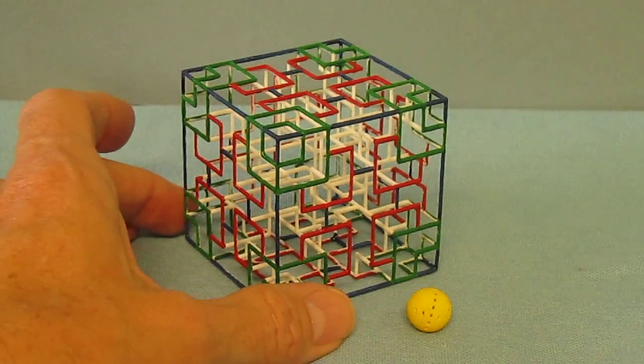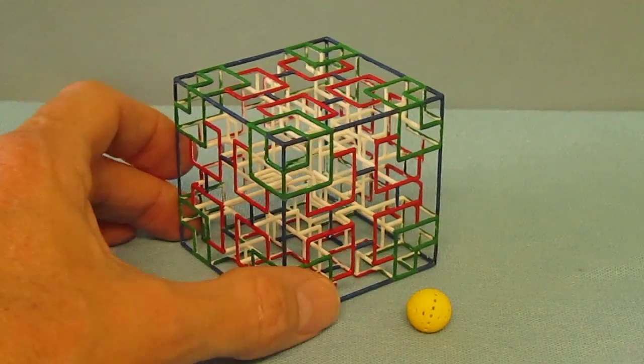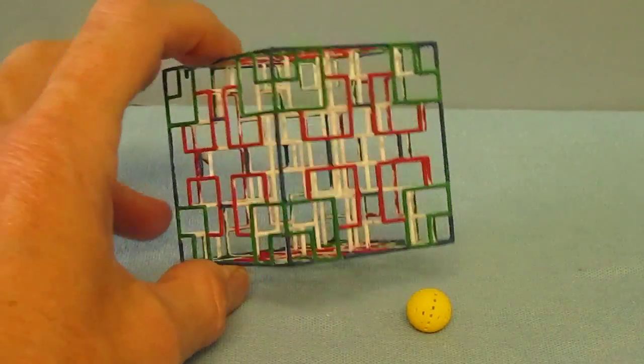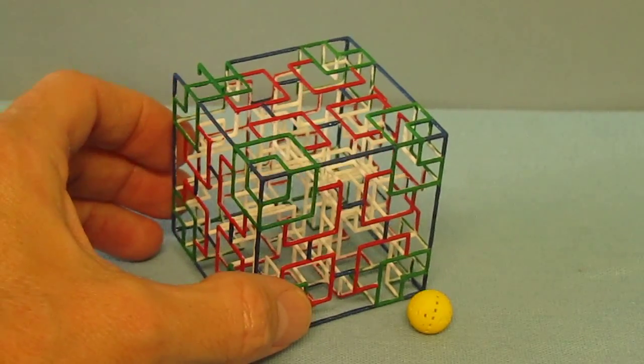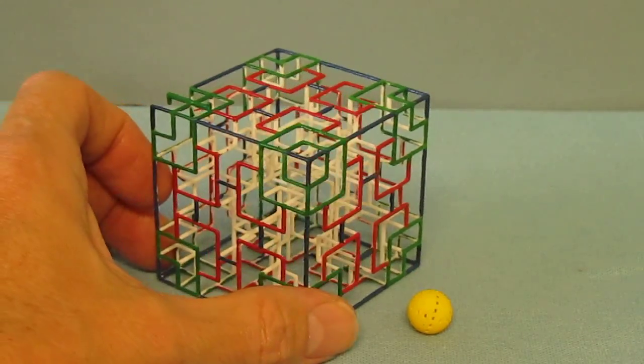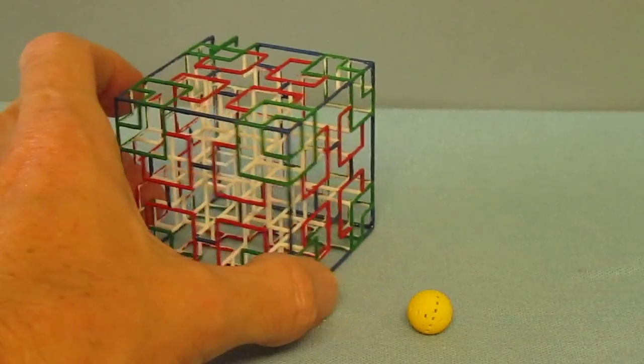As you can see the outer faces of the maze have an intricate symmetrical pattern and here I painted them red, blue and green to show them off.